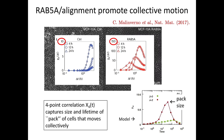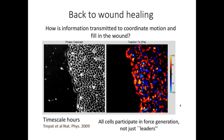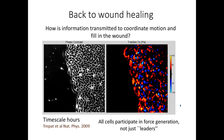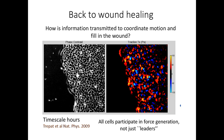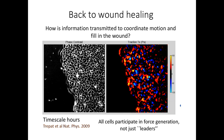Returning to wound healing: so far we have worked with periodic boundary conditions, so there is no boundary moving coherently. The key question—which has been around for some time—is how cells transmit information to correlate their motion and move coherently to fill in the wound.